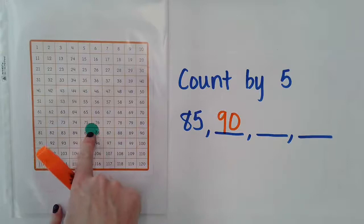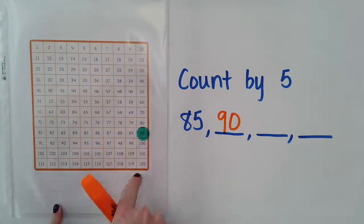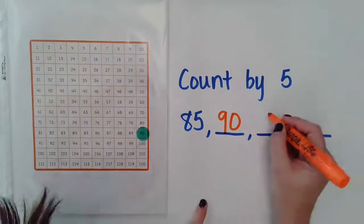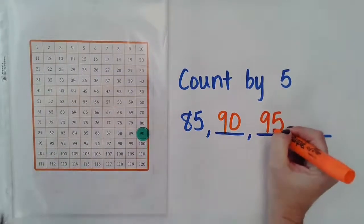And then I'm not going to go back to 85. I'm now going to be at 90 and count five more from there. One, two, three, four, five, which gives me 95.